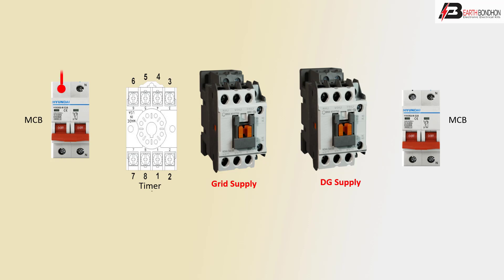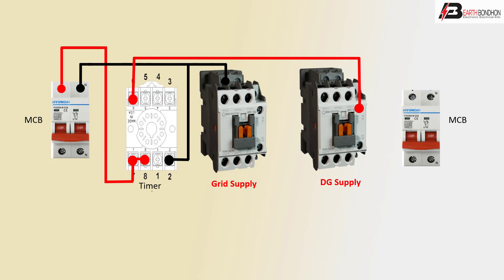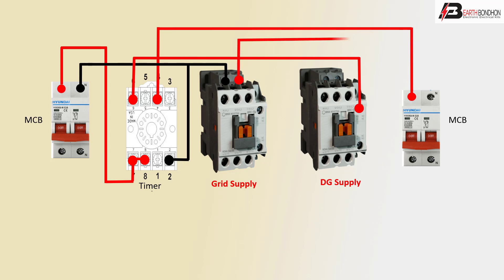First, positive line input to timer connection pin 7, and negative line to magnetic contactor coil connection and timer negative connection. Timer to second magnetic contactor NC connection, and pin 4 to MCB connection, and coil connection to second magnetic contactor NC connection.